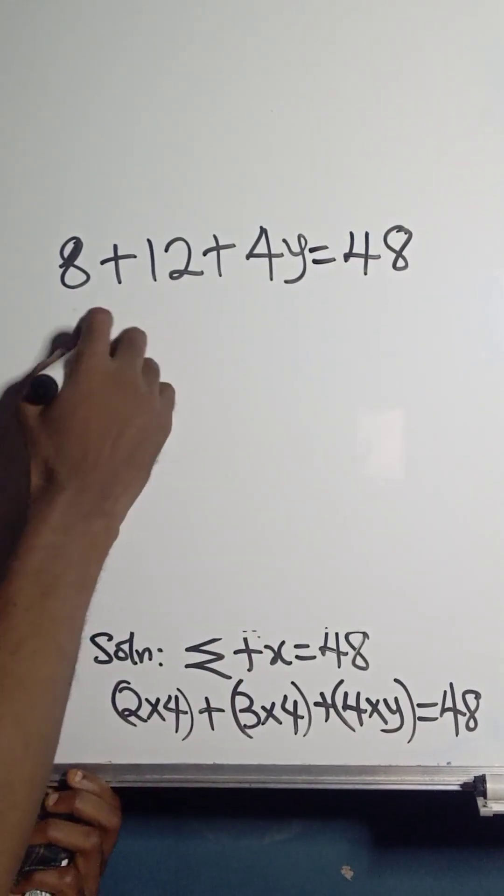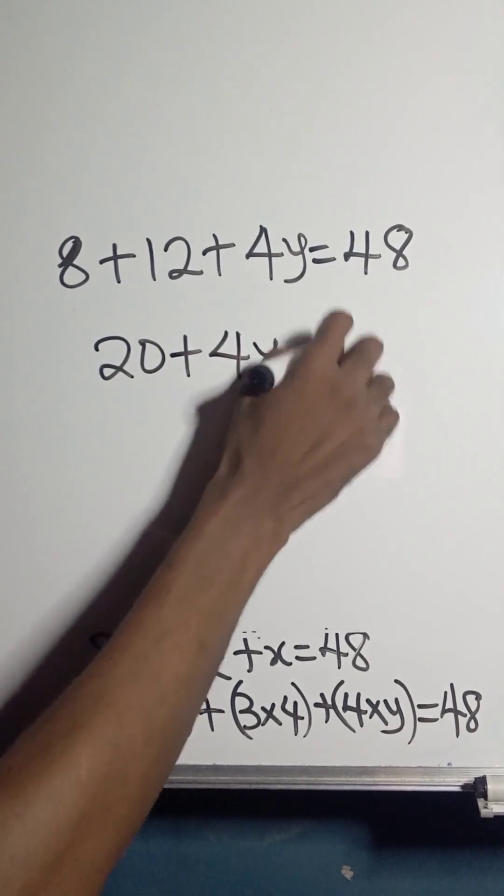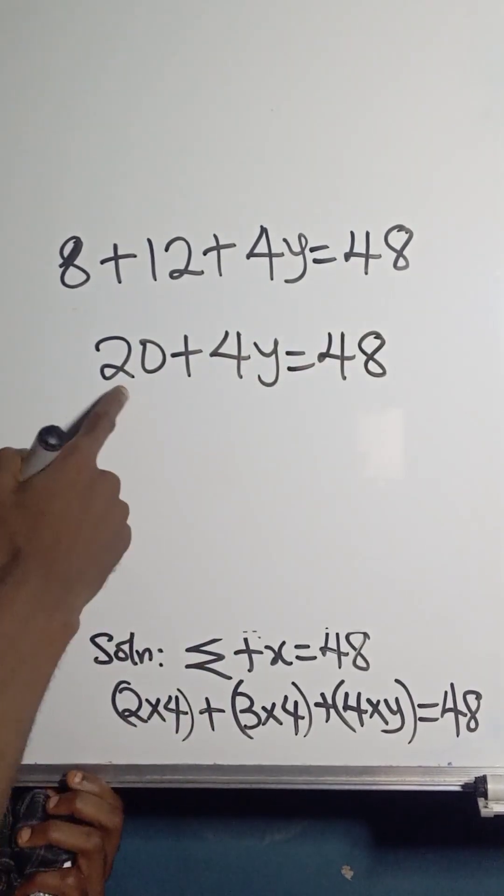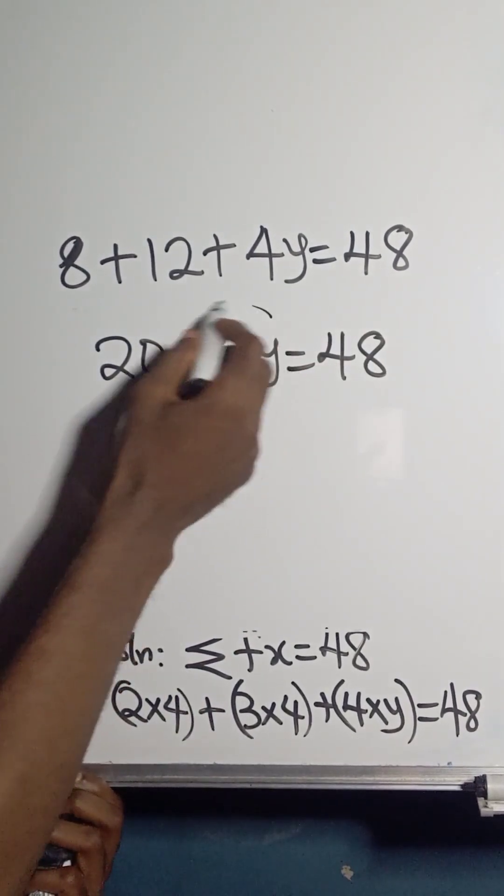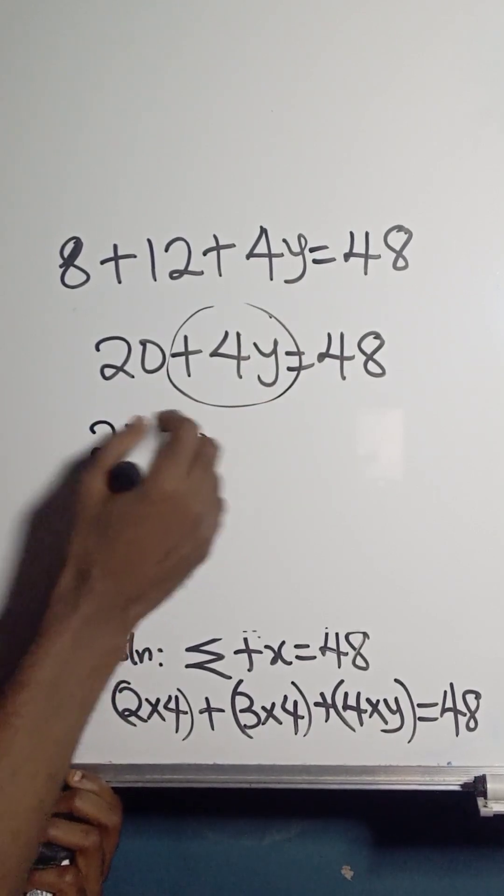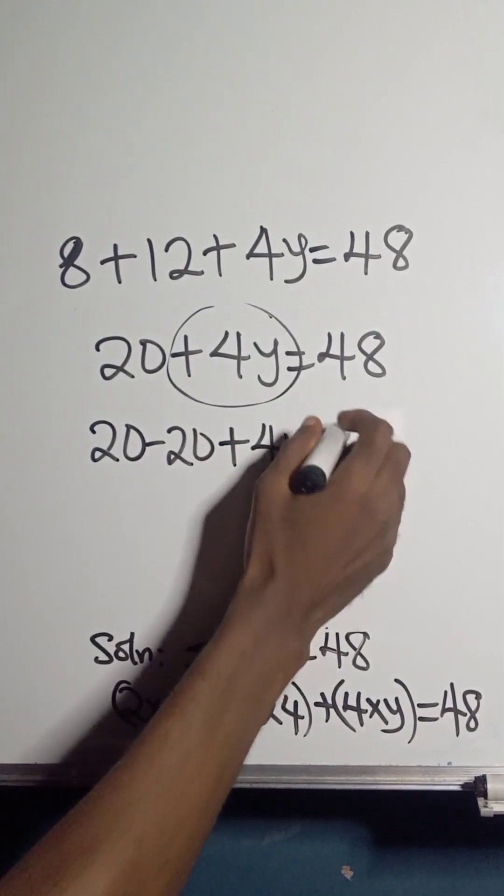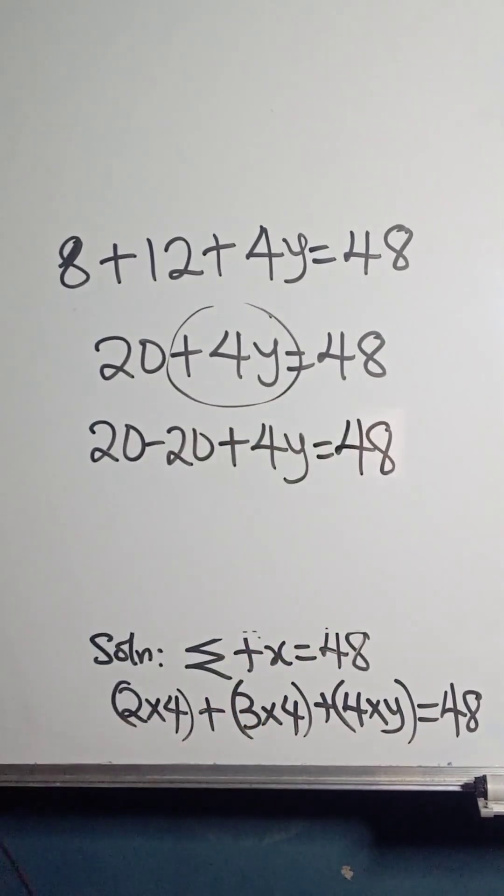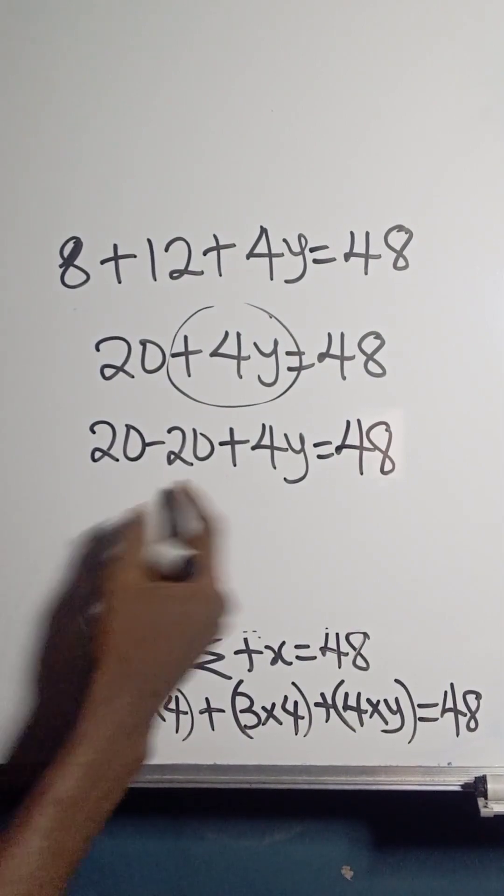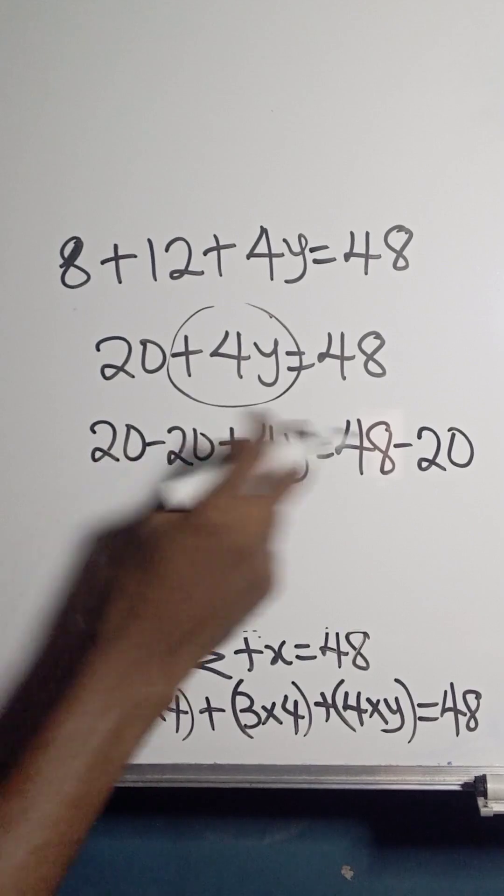Now how do I isolate 4y? I have to remove 20 from here. In math we know that whatever we remove from one side we have to also remove from the other. So this becomes zero and we are left with just 4y.